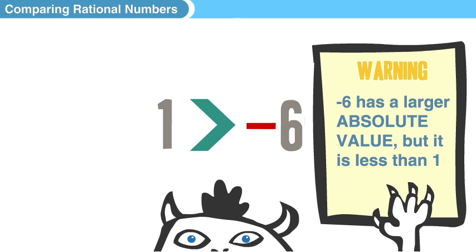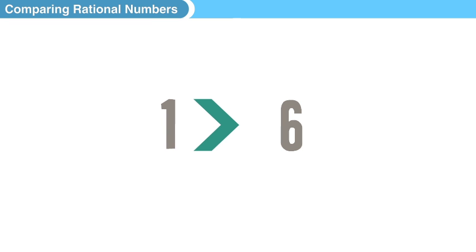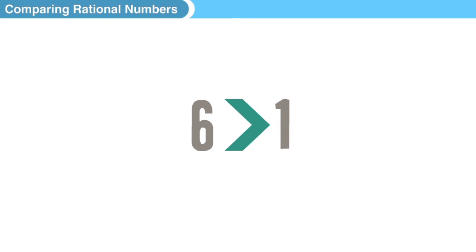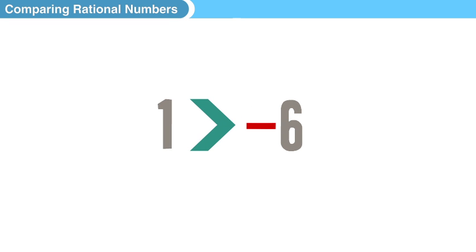Now a warning: negative six has a larger absolute value, but is less than one. Remember, six is a larger number than one—again, that's the absolute value of negative six—but when we're comparing our rational numbers, any positive number is always going to be bigger than any negative number.